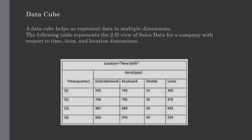Our next topic is data cube. What do we mean by a data cube? A data cube helps us represent data in multiple dimensions. The following table represents a 2D view of sales data for some company with respect to the time, item, and location dimensions. Here you can see the time, the type of item — which are entertainment, keyboard, mobiles, and logs — and the location, which is New Delhi.